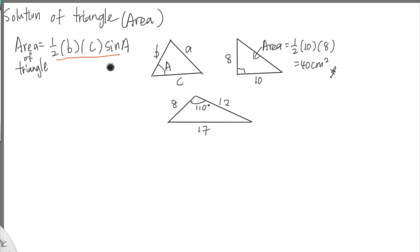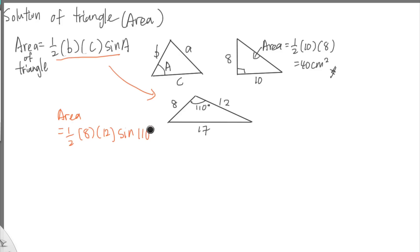So to find the area, we apply the formula. The angle is 110 degrees, and the side opposite to it is 17, so the other two sides are B and C — which are 8 and 12. Therefore: area equals one half times 8 times 12 times sine 110°. Calculating this gives you approximately 45.11 cm squared.